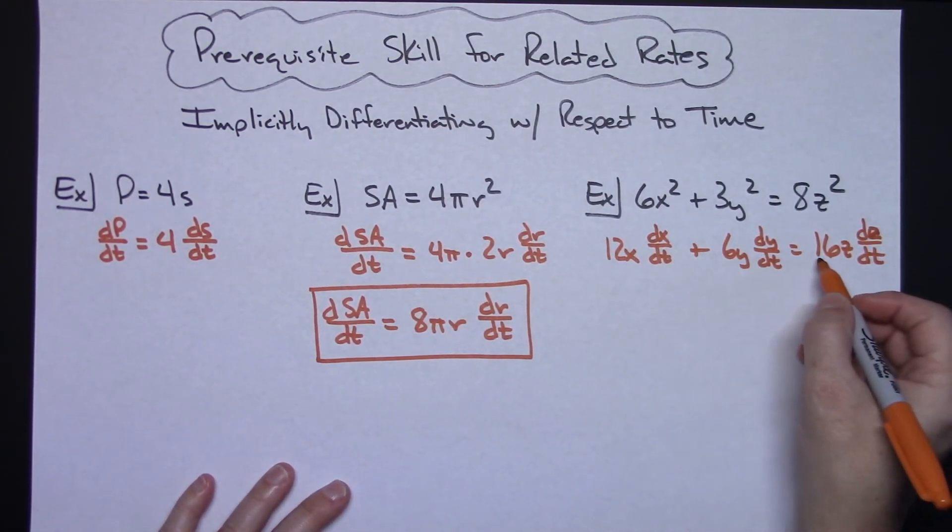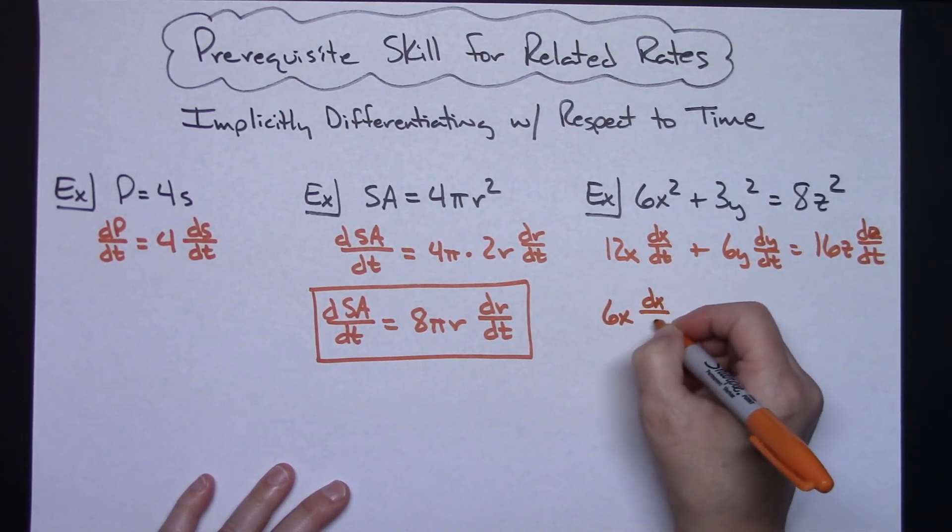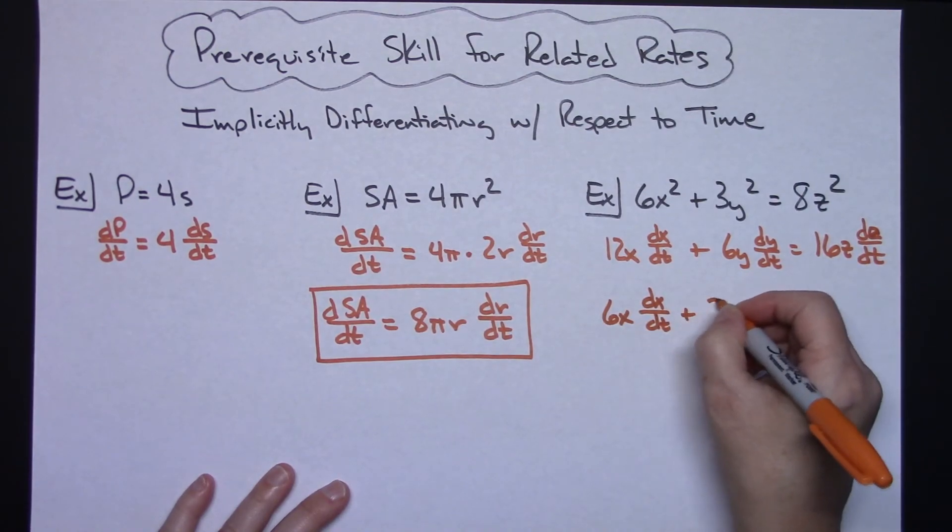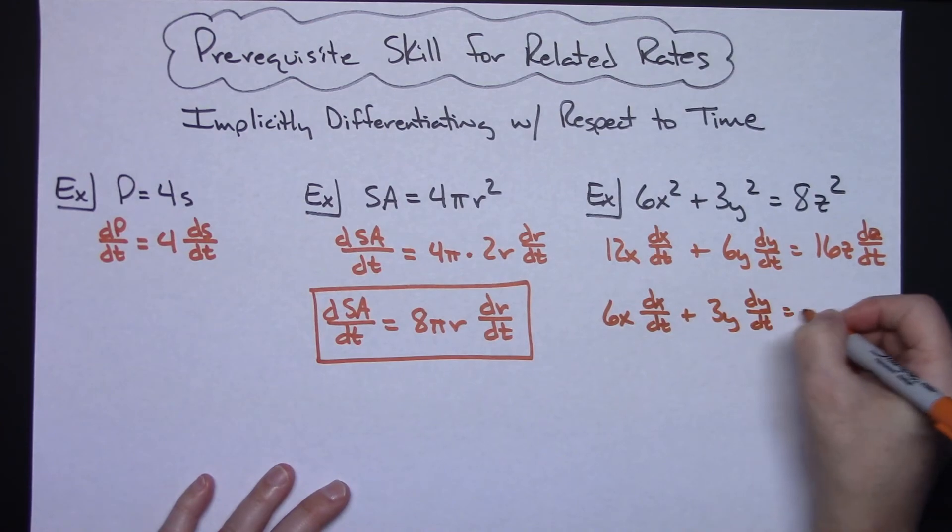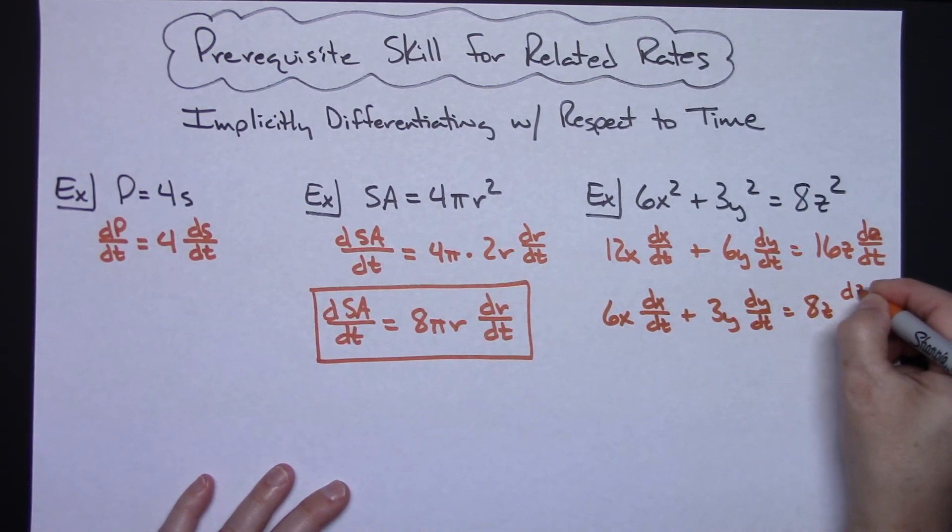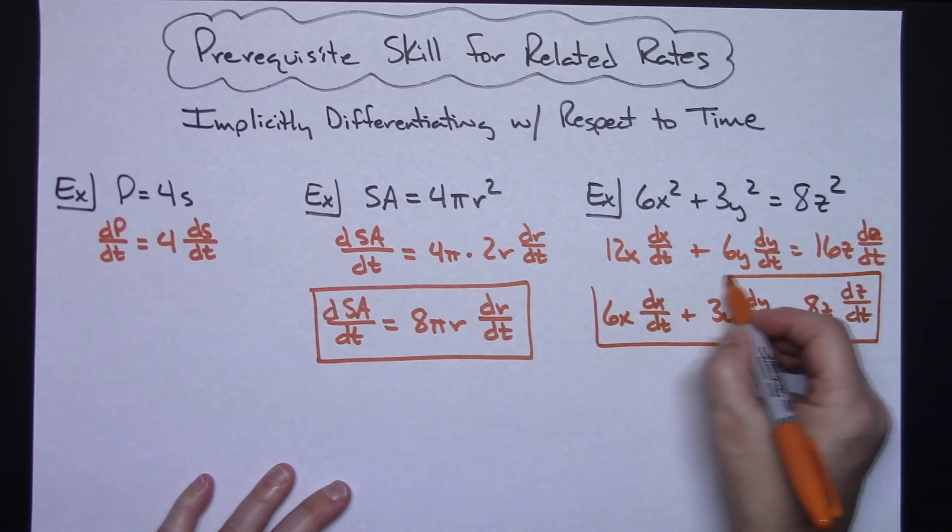So dividing through by a 2 is going to leave me with a 6x dx/dt plus 3y dy/dt and then 8z dz/dt for my final simplified derivative there.